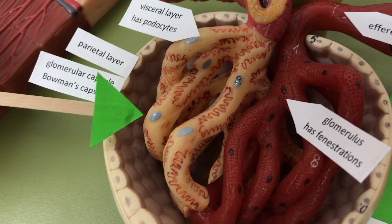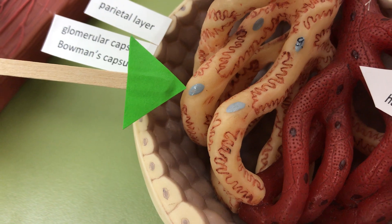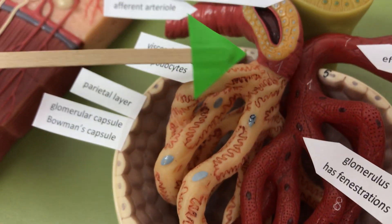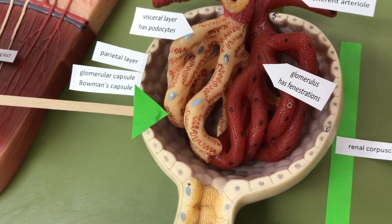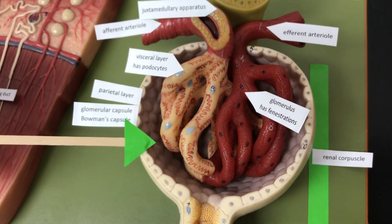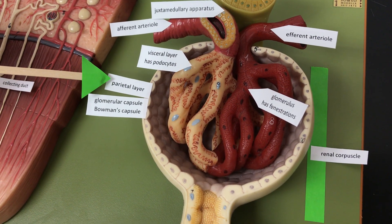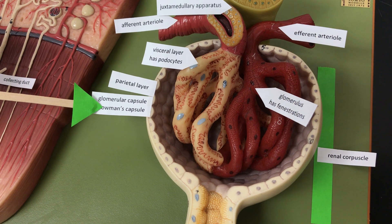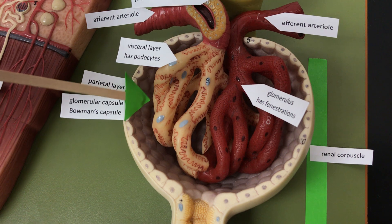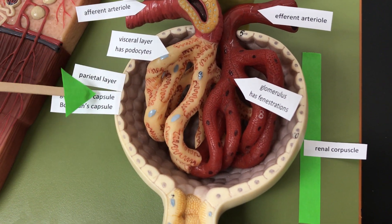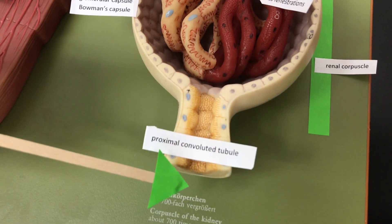The glomerulus is surrounded by the visceral layer of the glomerular capsule, or Bowman's capsule. This visceral layer has podocytes, and podocytes means toe cells. As blood comes into the glomerulus, everything is going to get pushed out except the formed elements and large molecules. The parietal layer of the Bowman's capsule is simple squamous epithelium. The filtrate is caught in the space between the visceral and parietal layers, and will be sent down the proximal convoluted tubule.